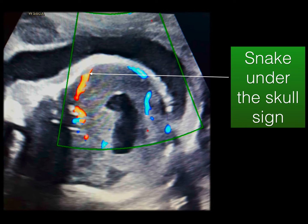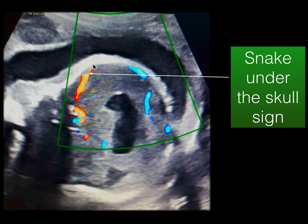One more important sign in holoprosencephaly to remember is the snake under the skull sign, which is where the anterior cerebral artery courses just beneath the skull instead of coursing around the corpus callosum. This is because of diffuse brain parenchyma — the ACA courses along the anterior aspect of the brain beneath the skull. Always apply Doppler to assess the course of the anterior cerebral artery.